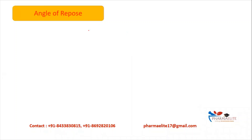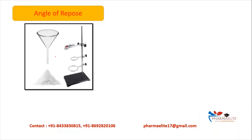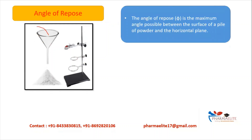Angle of repose is one of the parameters which measures the flow property of a powder. This is the apparatus you have seen in the lab which is used to measure the angle of repose. This is a stand which has clamps, and in these clamps the funnel is placed. Powder is poured from the top over the funnel, and a heap of powder is formed.